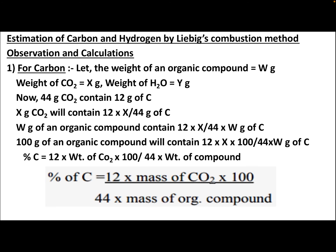For the observation and calculation: let the weight of the organic compound be W grams, weight of CO₂ = x grams, and weight of H₂O = y grams. Now, 44 grams of CO₂ (since C = 12, O = 16 × 2, total = 44) contains 12 grams of carbon. Therefore, x grams of CO₂ contains (12 × x)/44 grams of carbon. So W grams of organic compound contains (12 × x)/(44 × W) grams of carbon, and 100 grams will contain (12 × x × 100)/(44 × W) grams of carbon.